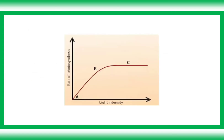Here we have the graph for light intensity. As light intensity increases, the rate of photosynthesis increases from point A to point B — light intensity is the limiting factor in this range. Beyond point B, the rate of photosynthesis remains constant even though light intensity continues to increase, which shows that light intensity is no longer the limiting factor.